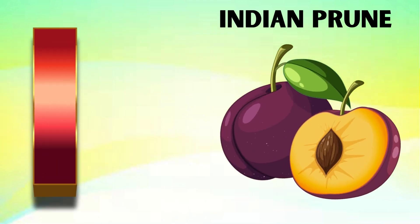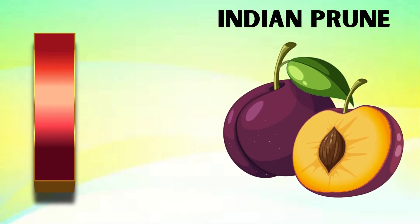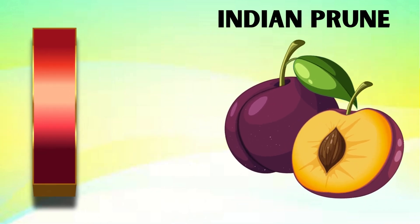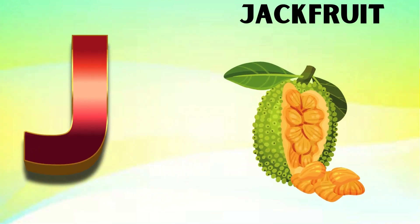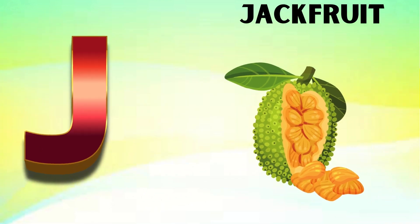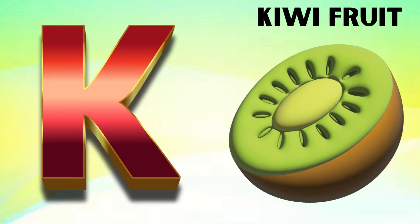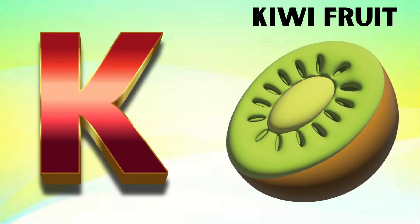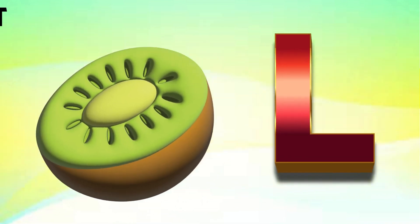I is for Indian prune, e-e-Indian prune. J is for jackfruit, j-j-jackfruit. K is for kiwifruit, k-k-kiwifruit.